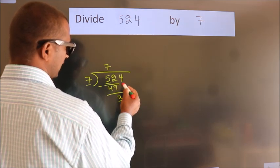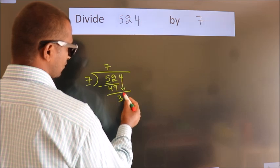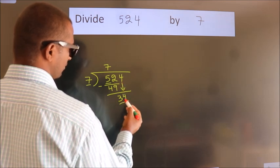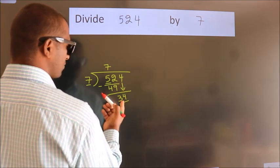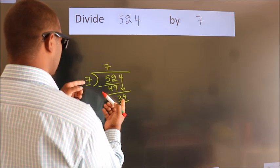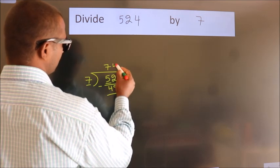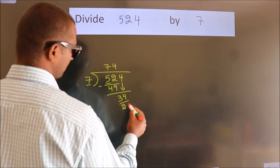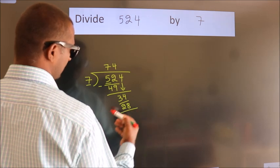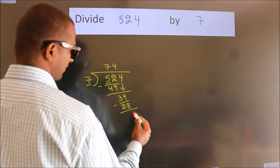After this, bring down the next number. So, 4 down, giving us 34. A number close to 34 in the 7 table is 7 fours, 28. Now we subtract and get 6.